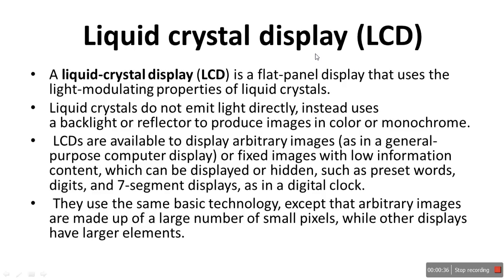Instead of emitting light, LCD uses a backlight or reflector to produce images in color or monochrome — that is, black and white. Monochrome means a single color — mono means single, chrome means color. LCDs are available to display arbitrary images, as in general purpose computer displays, and many computer monitors still use LCD today.